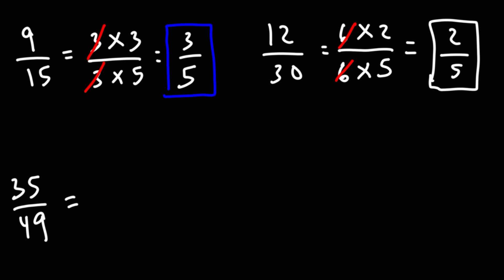Now 35 and 49, they're both divisible by 7. 35 is 7 times 5. 49 is 7 times 7. We could cancel a 7, and we're left with 5 over 7.